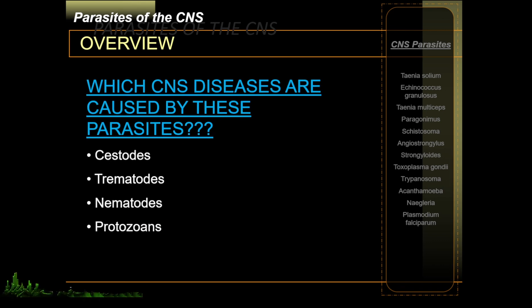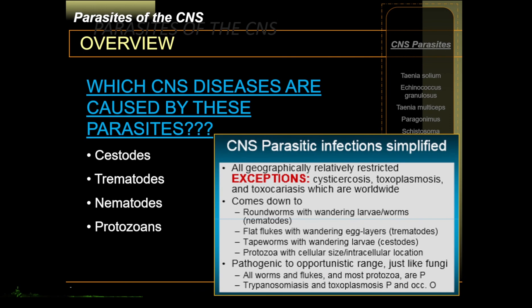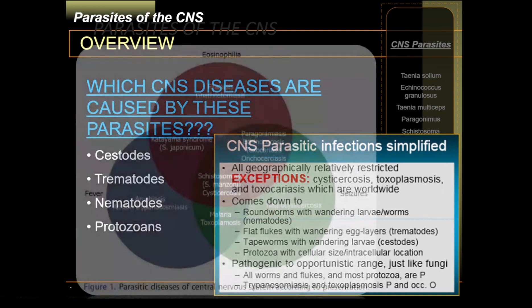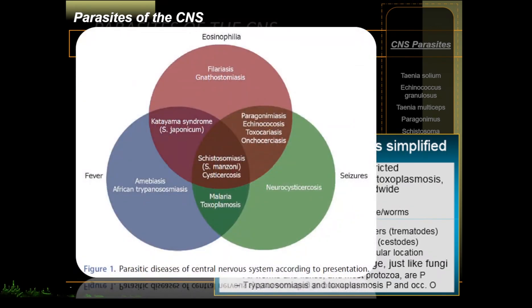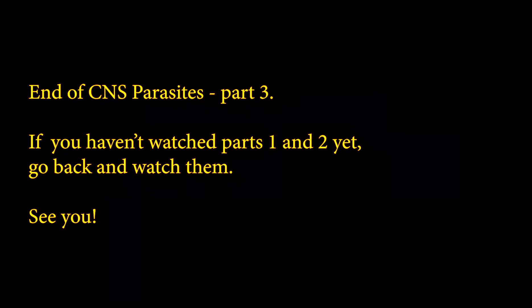As a summary: which CNS diseases are caused by cestodes, trematodes, nematodes, and protozoans based on this lecture? Please review your notes. A summary photo of CNS parasitic infections simplified is provided — it highlights the parasites discussed, though it is noted to not be fully accurate. That is the end of the lecture. Thank you for listening. Good luck.